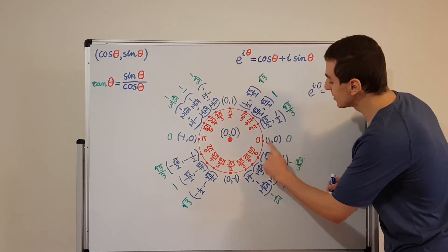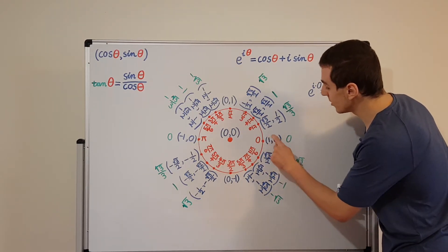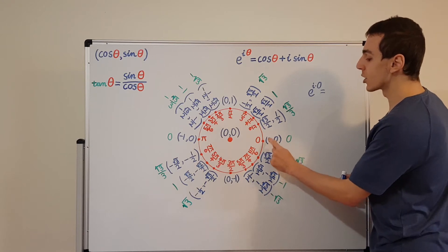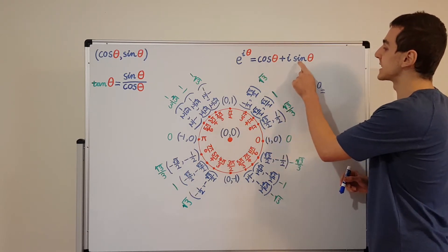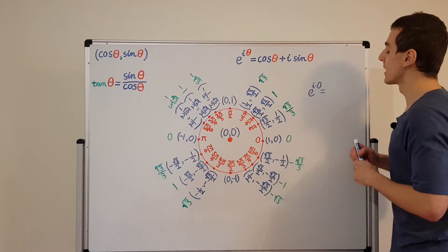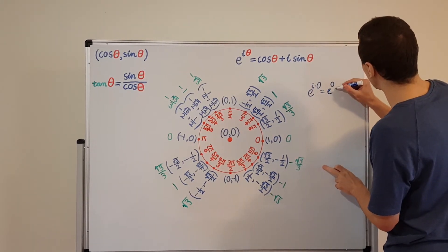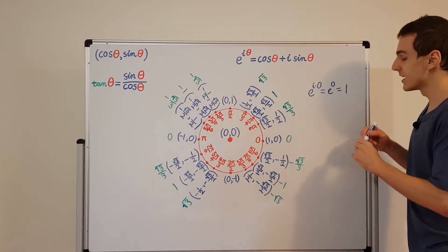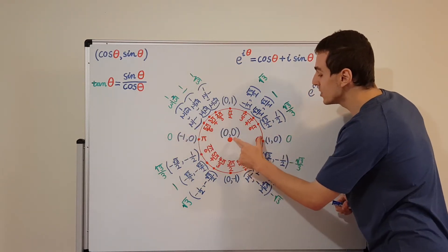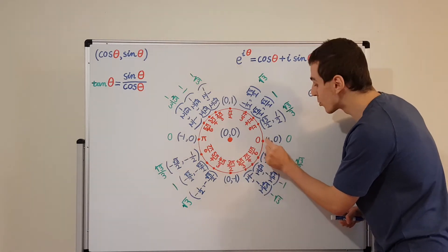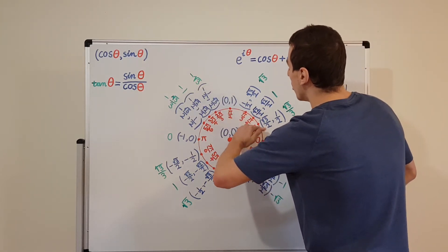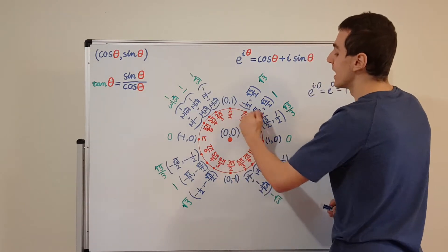If we put theta equals zero, we get e to the i times zero. The diagram tells us the real component is one and the imaginary component is zero. Cosine of zero is one and sine of zero is zero, so we don't have an imaginary component — the imaginary unit i is just multiplied by zero. So this is actually the same as e to the zero, which equals one. This is the real number one on the real axis. As we increase the angle, we go into complex numbers — the unit circle only intersects the real axis at two points.